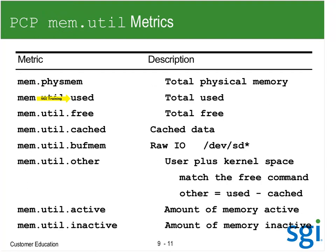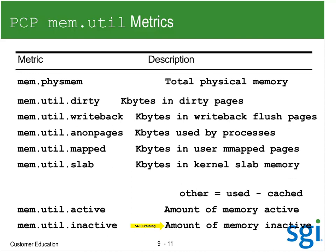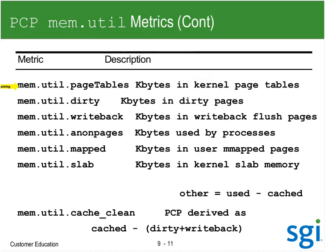I used the per-node basis view the other day, and another plot for per-node free. Then we have the cache field - that's the one I've been pulling apart all week. Then I have the buff mem, and then I have other - I never use that. Other was basically used minus cache, it's the user space plus the kernel space, anything that's not the cache field. Then we're going to look at active and inactive.